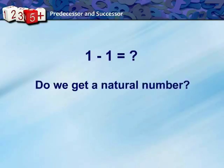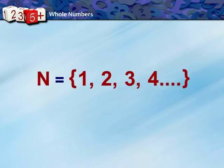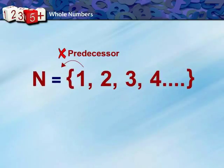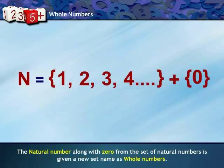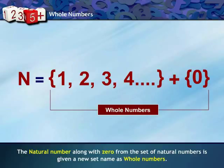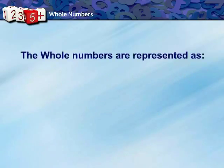What if we subtract 1 from 1? Do we get a natural number? The number 1 has no predecessor in the set of natural numbers. Therefore, the natural numbers along with 0 form a new set called whole numbers. Whole numbers are represented as W, where W = {0, 1, 2, ...}.